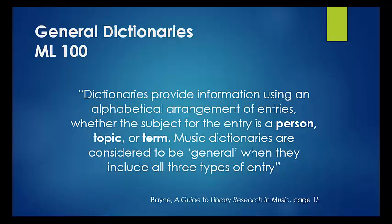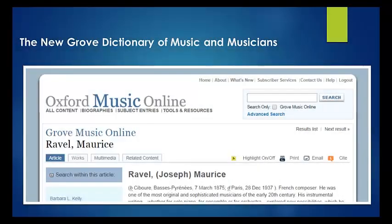A dictionary or encyclopedia can be defined as an alphabetical arrangement of entries either on a person, a topic, or a term. Dictionaries are classified as general when they include all three types of entries in one source. The standard English language encyclopedia is the New Grove Dictionary of Music and Musicians.